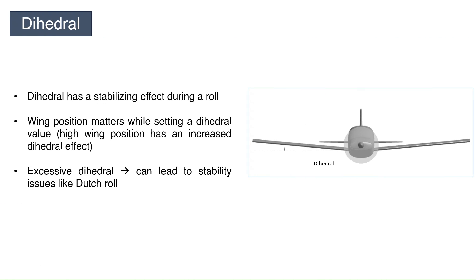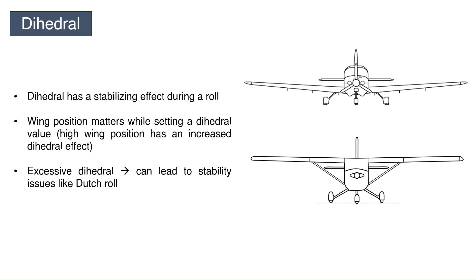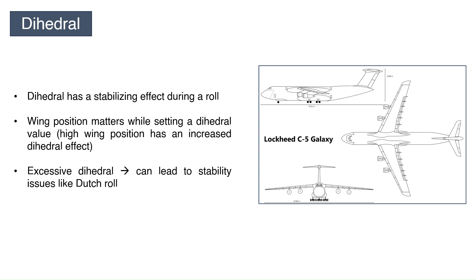Dihedral. It is the angle of the wing with respect to the horizontal, when viewed from the front. When an aircraft rolls to one side, a positive dihedral angle tends to roll it back to level. Wing position also has an effect on the effective dihedral. That is why many high-wing transport aircraft actually need a negative dihedral, called anhedral, to counter excessive effect of dihedral. Excessive dihedral can be bad because it can cause stability issues like the Dutch roll. Generally, low-wing aircraft require more dihedral than high-wing aircraft due to the positioning of the wing.